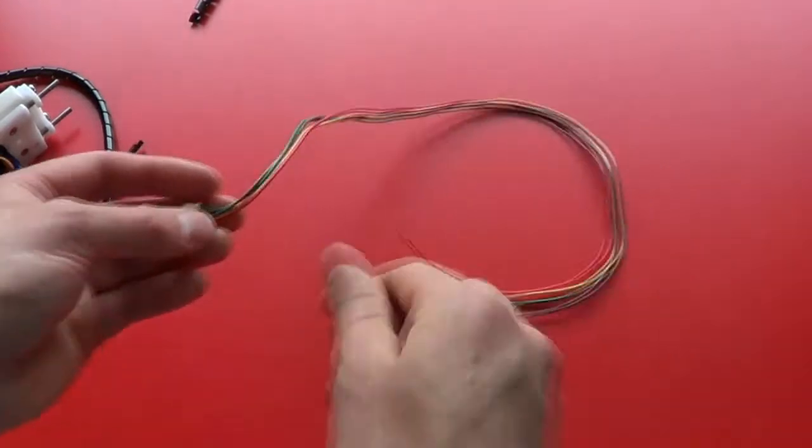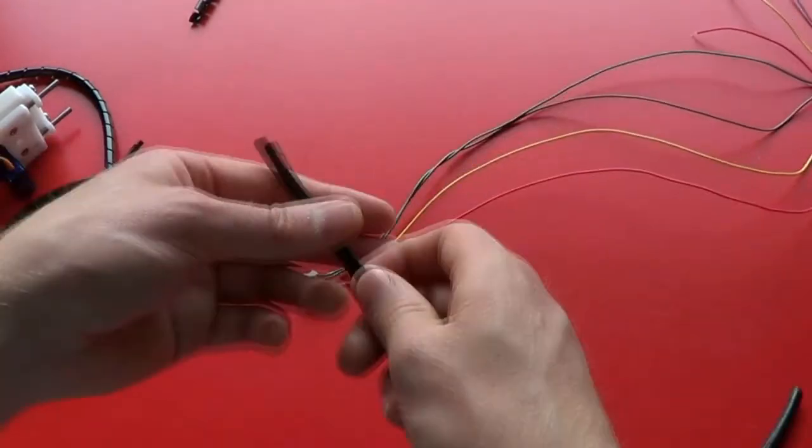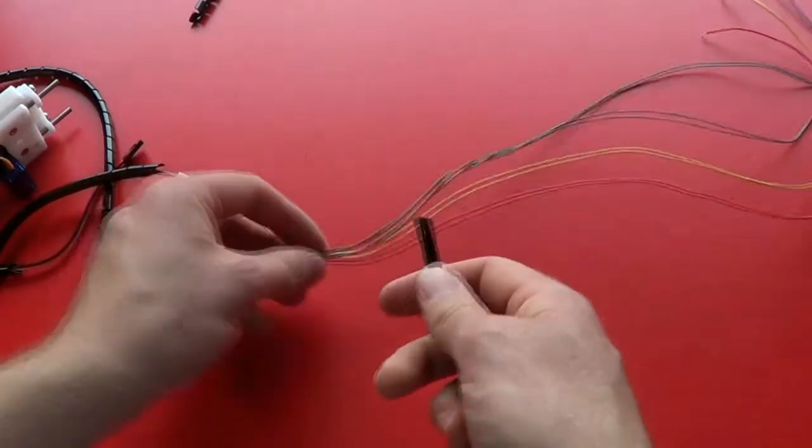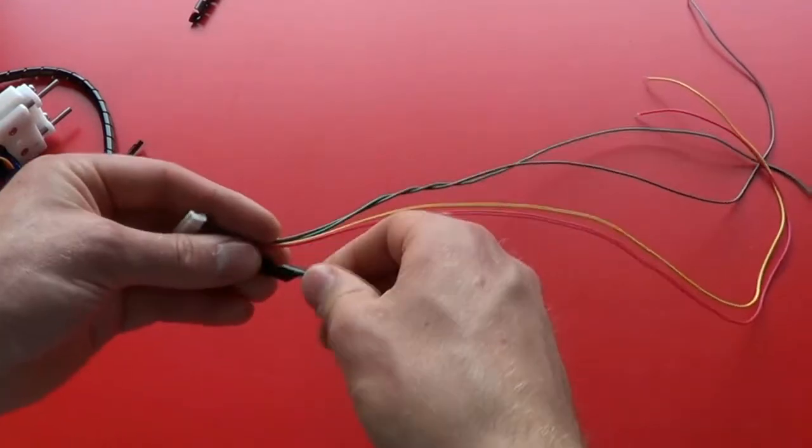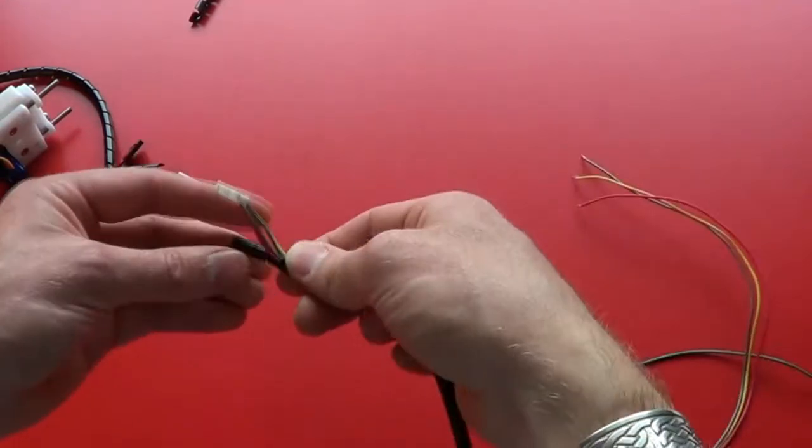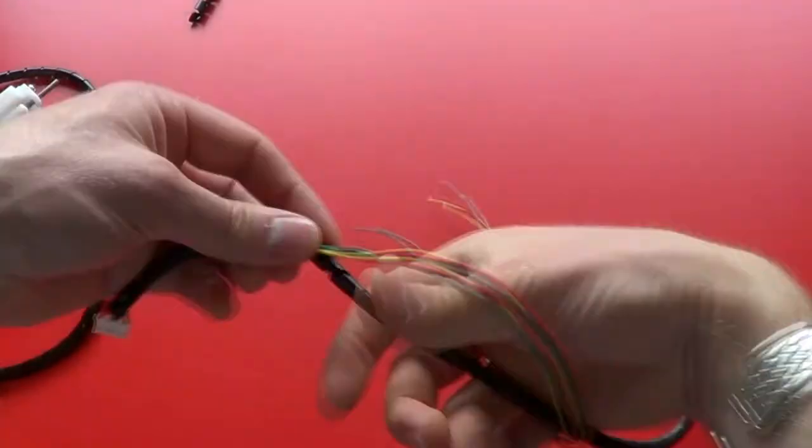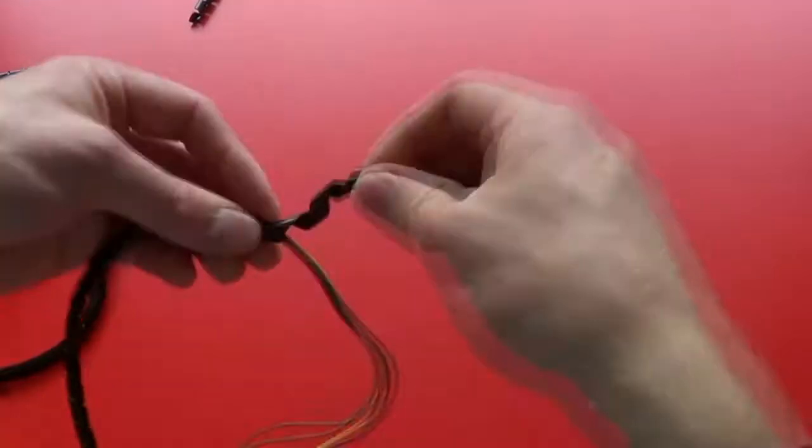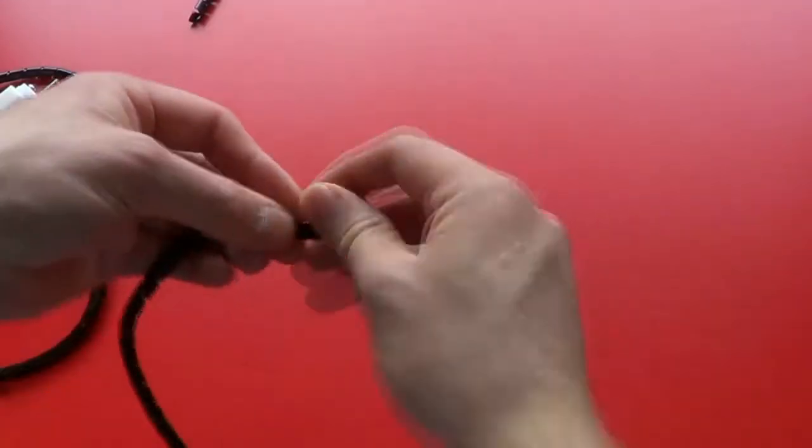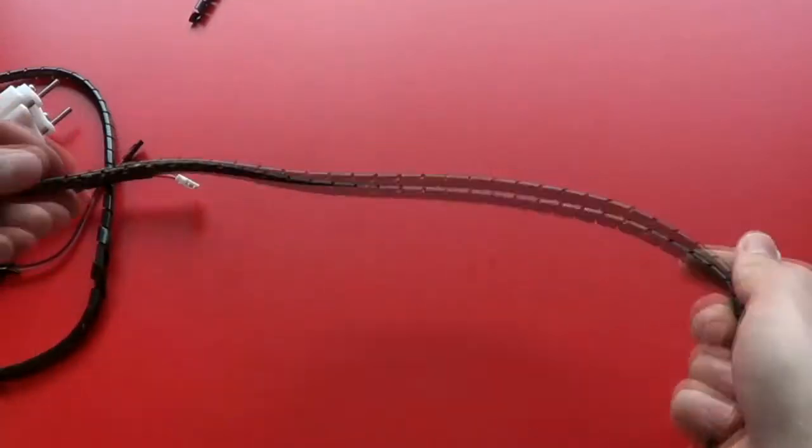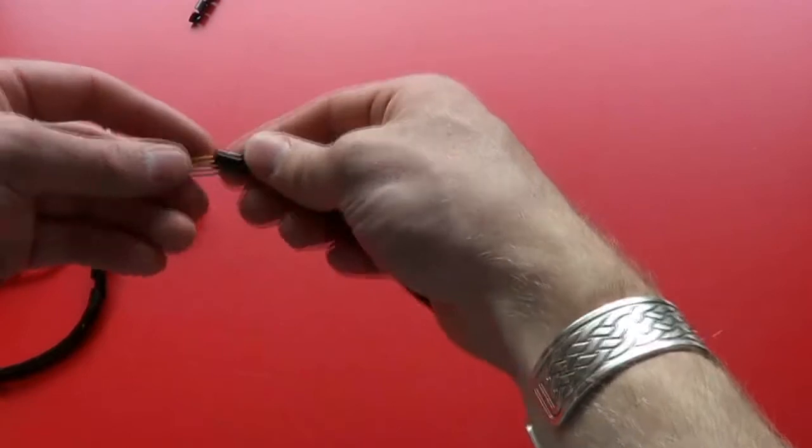And we now do the same with the Y motor cable. That's the longer of the two cables and we use the long piece of spiral wrap. And that's the Y motor cable finished.